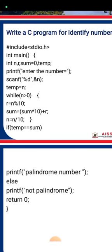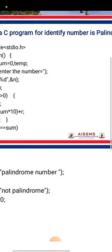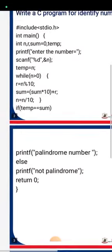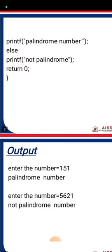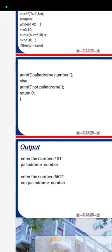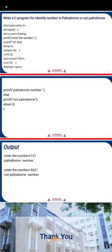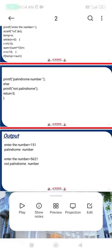This is our actual program for identifying palindrome and not palindrome. The output shows: if we enter the number 151, it prints 'palindrome number.' If we enter a number like 5621 where the starting and ending digits are different, it prints 'not a palindrome number.' This is the main logic of the palindrome number program. I hope you understand this program.